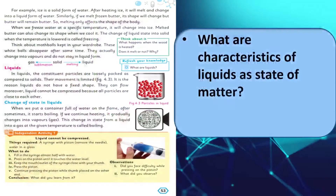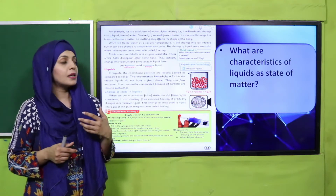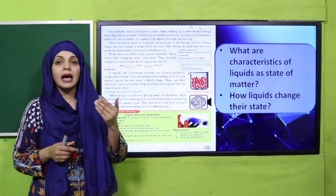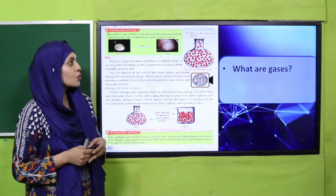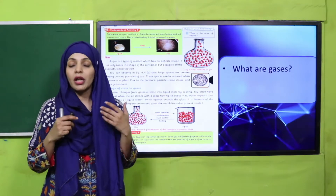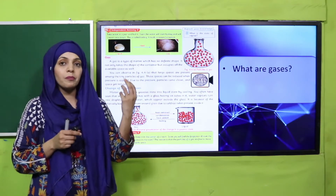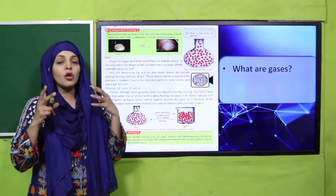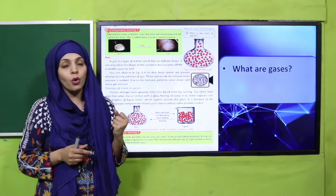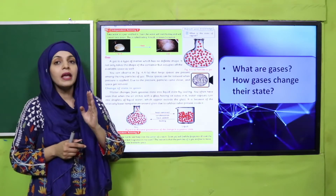We also discussed the characteristics of liquids. Liquids do not have a fixed shape — they take the shape of the container they are poured in. Liquids change their state when heat is added or removed, or when the temperature is decreased. Then we discussed gases. Gases do not have a fixed or definite shape; their particles are very far apart, and they occupy the space they are stored in. Gases change their state when heat is removed from them.